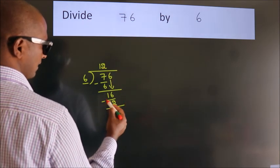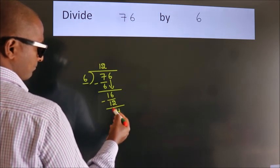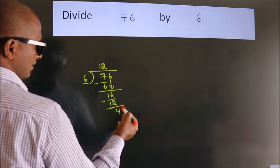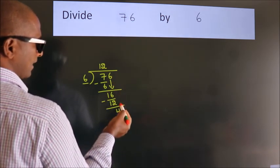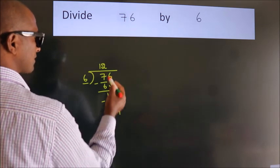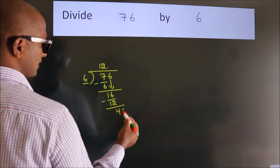Now, we subtract. We get 4. After this, no more numbers to bring it down. So, what we do is, we put dot, take 0.